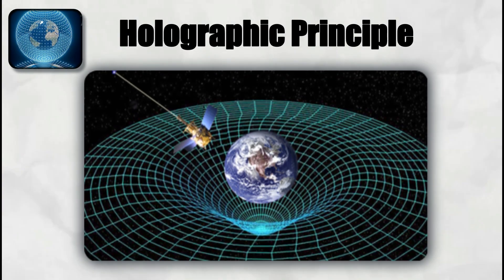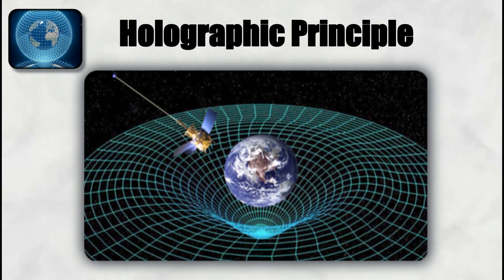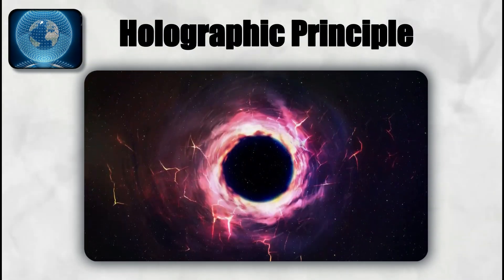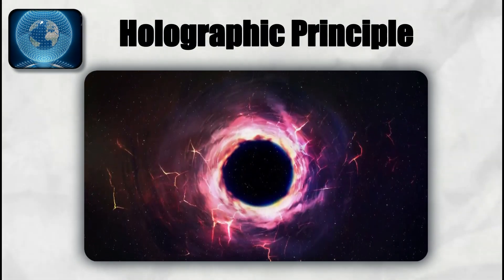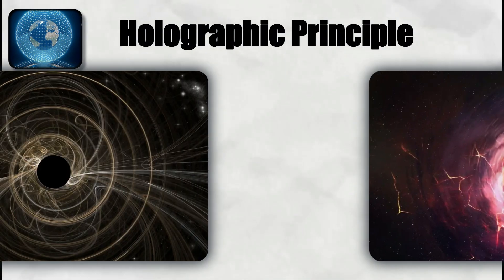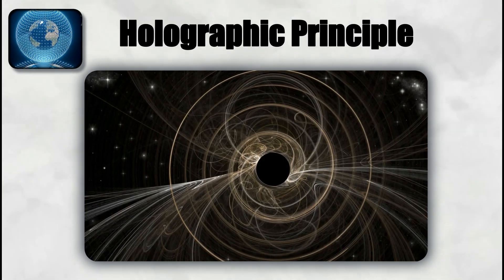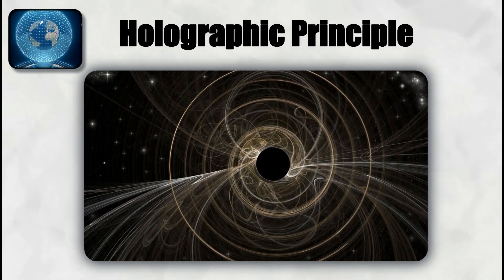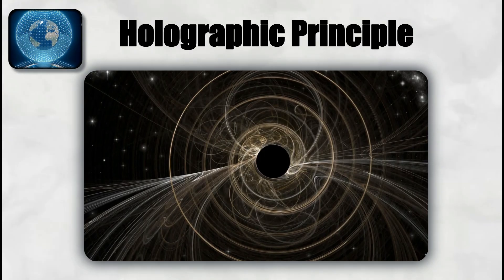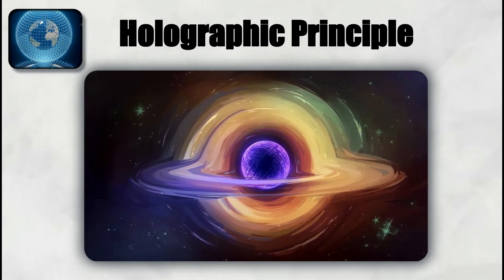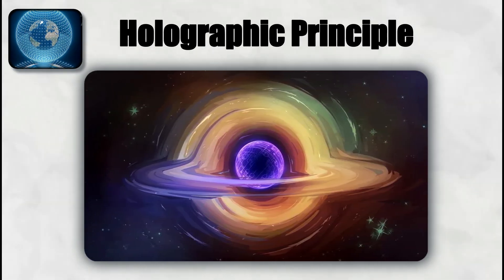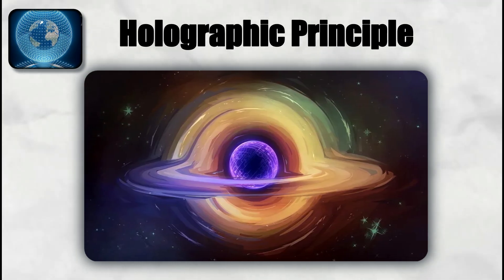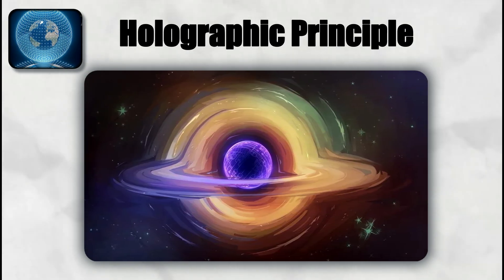The holographic principle also connects to the black hole information paradox. If black holes completely destroyed information, quantum mechanics would be violated. But if the holographic principle is correct, the information is not lost but encoded in subtle correlations on the horizon and eventually released with Hawking radiation. This interpretation preserves unitarity, a core principle of quantum theory, while respecting the thermodynamic properties of black holes.